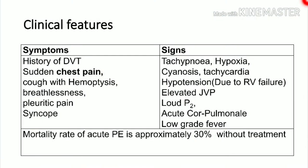In acute pulmonary embolism, symptoms include a recent history of DVT, sudden onset of breathlessness — a classic finding — cough with hemoptysis, and pleuritic chest pain resembling pneumonia but without infection (screen may be negative). Syncope can occur, mainly in massive pulmonary embolism due to reduced cardiac output. In summary, symptoms include DVT, pleuritic chest pain, severe cough, hemoptysis, breathlessness, and syncope.